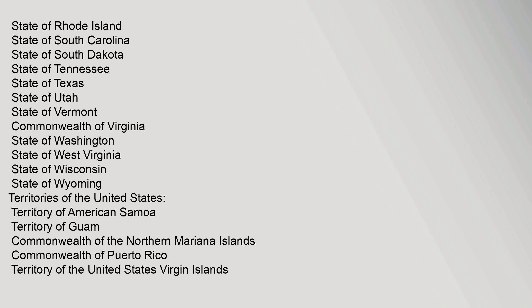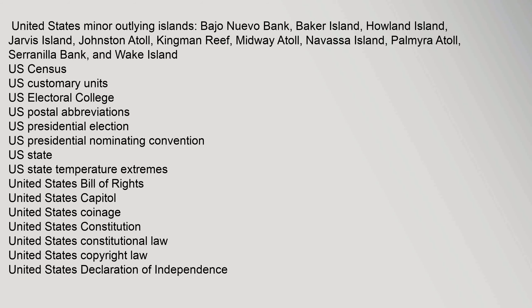Territories of the United States: Territory of American Samoa, Territory of Guam, Commonwealth of the Northern Mariana Islands, Commonwealth of Puerto Rico, Territory of the United States Virgin Islands, United States Minor Outlying Islands — Bajo Nuevo Bank, Baker Island, Howland Island, Jarvis Island, Johnston Atoll, Kingman Reef, Midway Atoll, Navassa Island, Palmyra Atoll, Serranilla Bank and Wake Island.